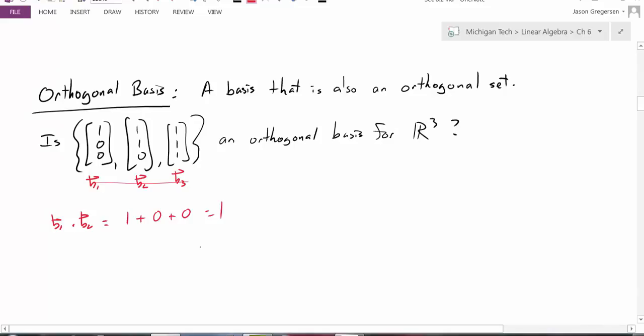Now, if I looked at a different basis, for instance, if I looked at the basis where I have these as my basis vectors, now I can see that if I took B1 dotted with B2, I would get 0. And if I took B1 dotted with B3, I would also get 0. And if I took B2 dotted with B3, I would also get 0. So this would be an orthogonal basis for R3.